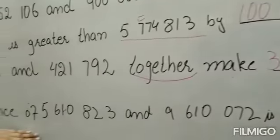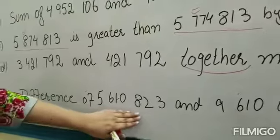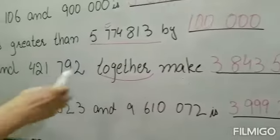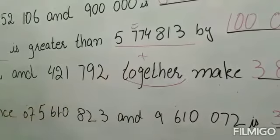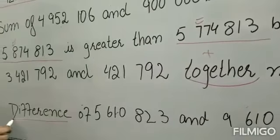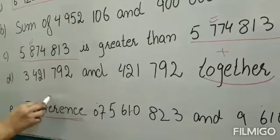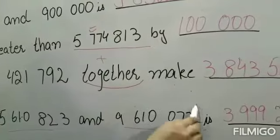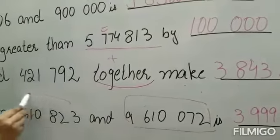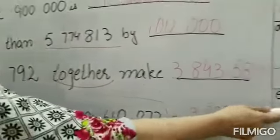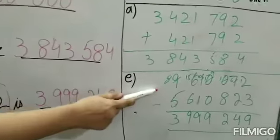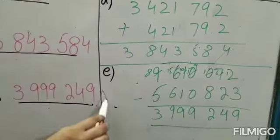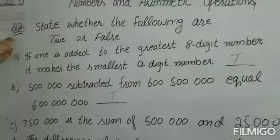Blank E: difference of 5610823 and 9610072. पहले आपके पास together को बताया, इसे हमने plus किया। अब बात आती है difference की। Difference का मतलब होता है फर्क find करना। फर्क हमेशा minus की through find होता है। आप अपनी दोनों numbers में से बड़े number को सबसे पहले लिखें और फिर दोनों का आपस में minus करें, जैसा कि मैंने rough work पे दिखाया है। आपका answer आएगा 3999249।